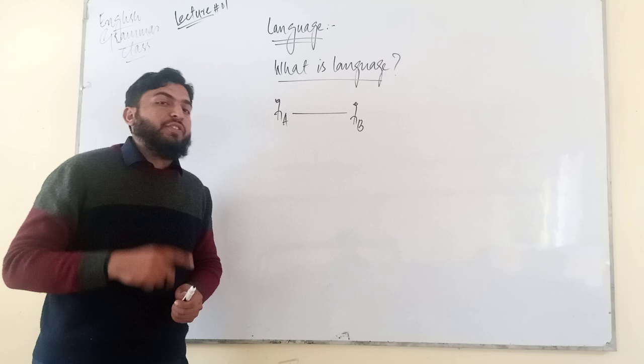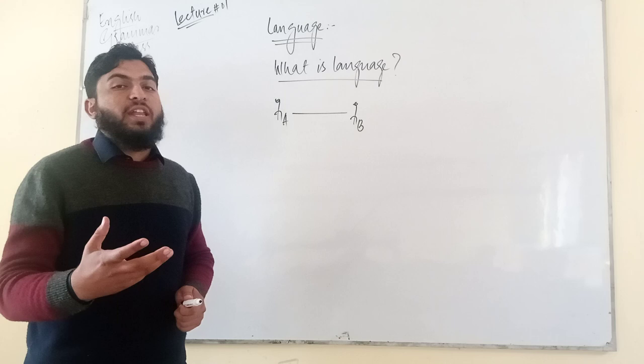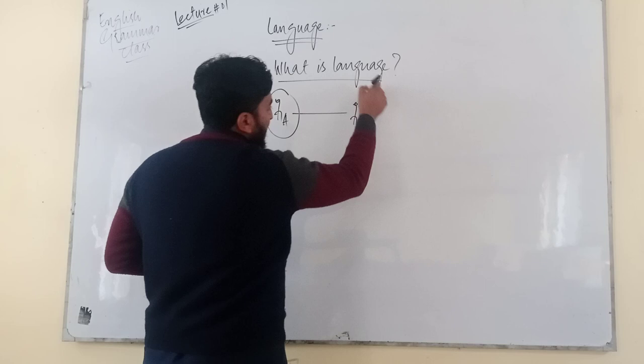سوال یہ پہلا ہوتا ہے کہ language میں ہمارے ساتھ دو participants کا ہونا لازمی ہوتا ہے. What is the role of the first participant and what is the role of the second participant? Participant means we can replace the word participant with body 1 or body 2 or body A or body B.